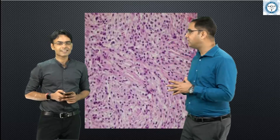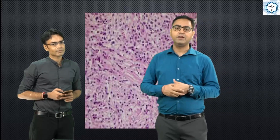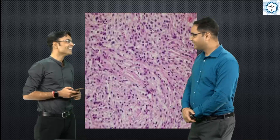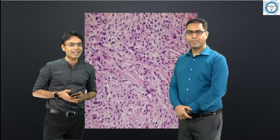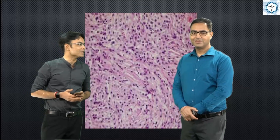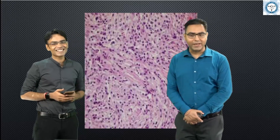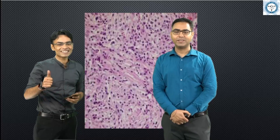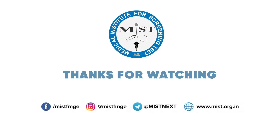The drug of choice for rhinoscleroma — a chronic granulomatous infection — is tetracycline and streptomycin, given generally for six weeks. The second-line drug is rifampicin. This is a very important exam question and we really hope it helps the students. Thank you very much Kunal, and we'll keep bringing this overlap of ENT and pathology in further sessions.